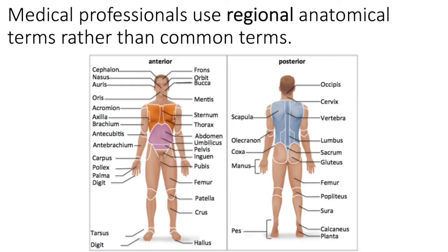Regional terms are important to know because we want to sound professional when talking about anatomy. We don't say 'belly button' anymore — we say umbilicus. Instead of 'elbow,' we say olecranon. Instead of 'mouth,' we say oris. The calf would be the sura, and so on. It's going to be important to know all of these regional terms so that when you write discussions about a case study, you use the correct anatomical term for body parts instead of the common term.